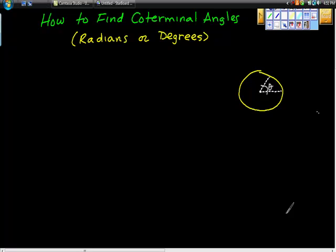So today the question goes to this: how do we find coterminal angles? How do we find coterminal angles if we have radians or if we have degrees?